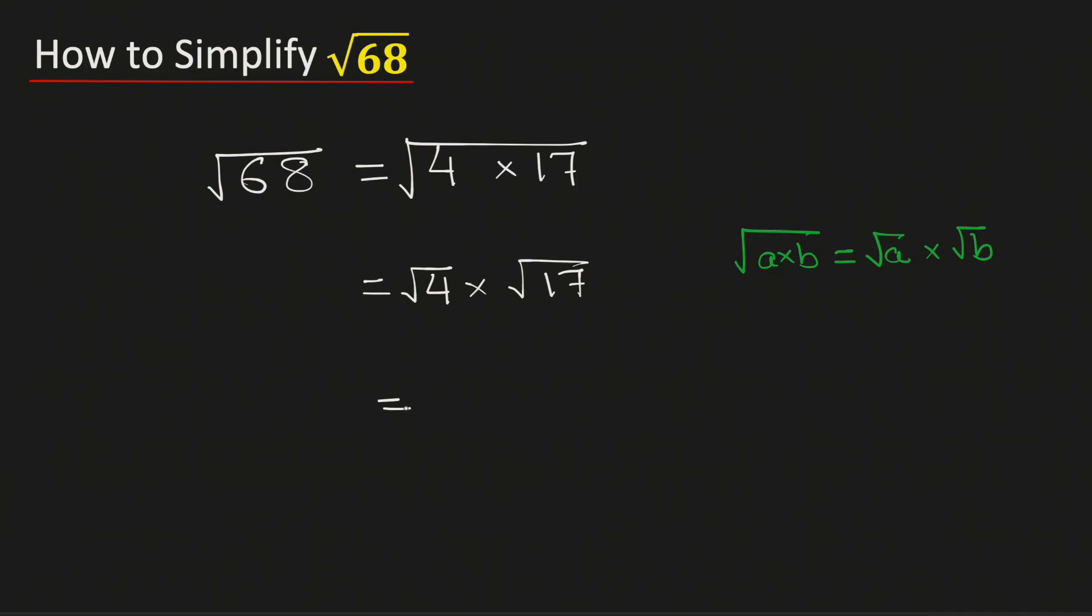We know that root 4 is equal to 2, and root 17 cannot be simplified further because 17 is a prime number. Multiplying, we get 2 root 17.